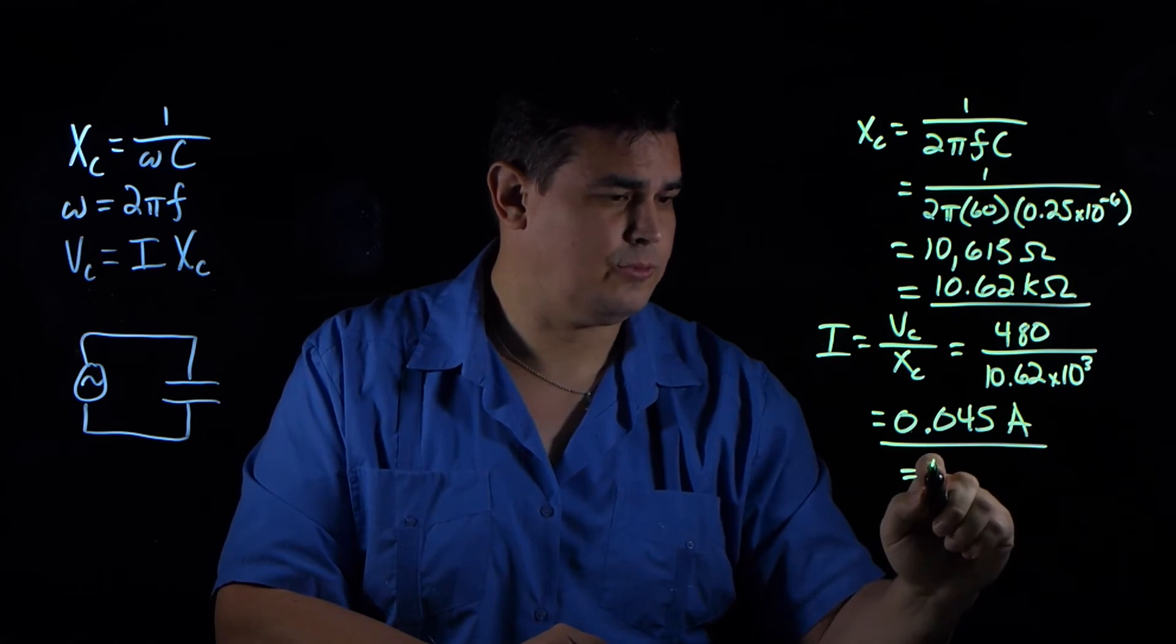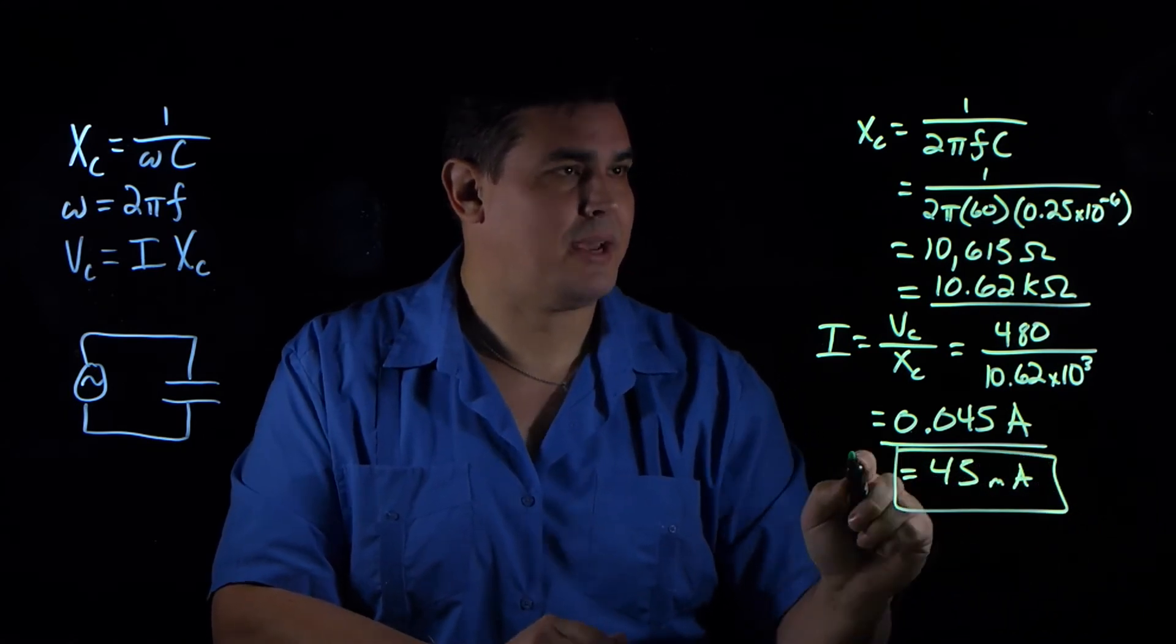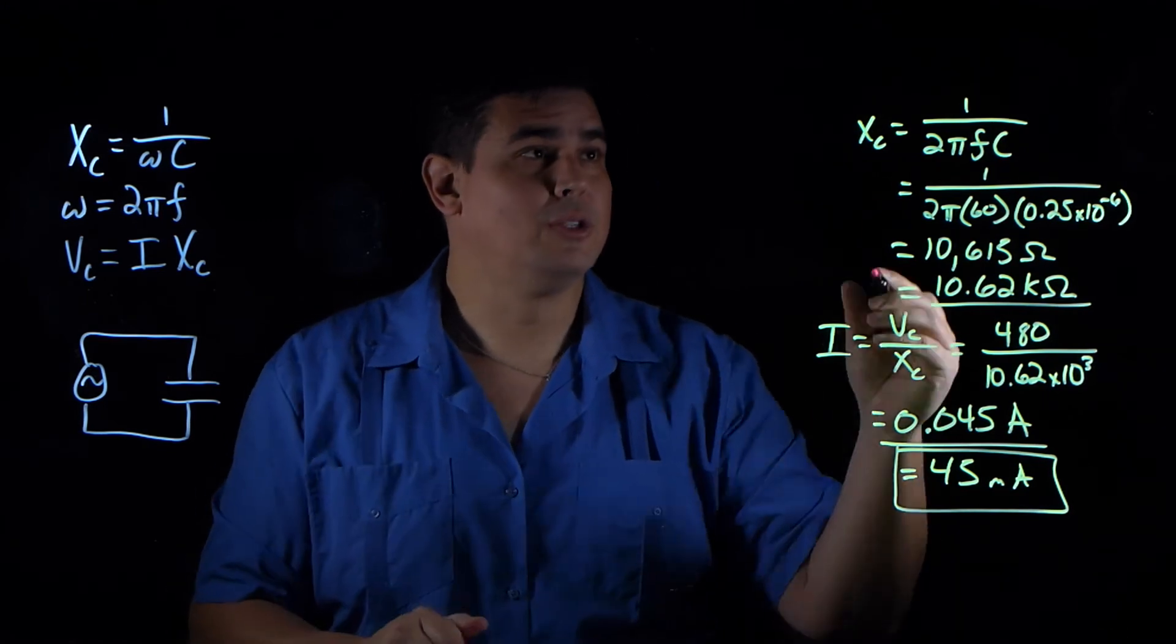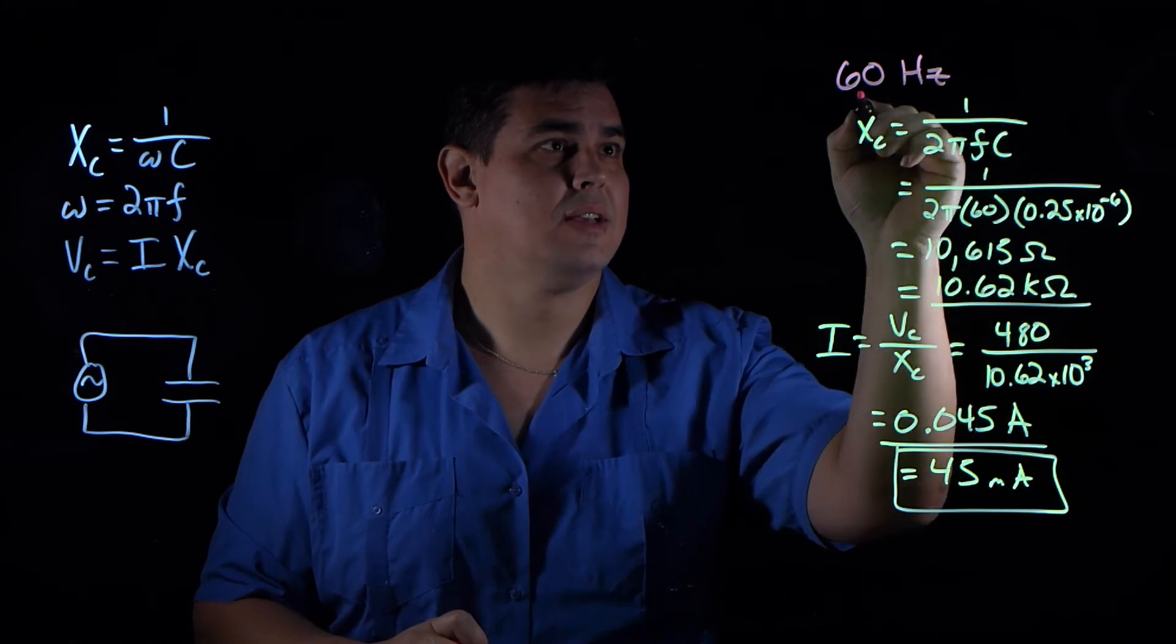So that's 45 milliamps. That's my current in the circuit when the source was 60 Hertz.